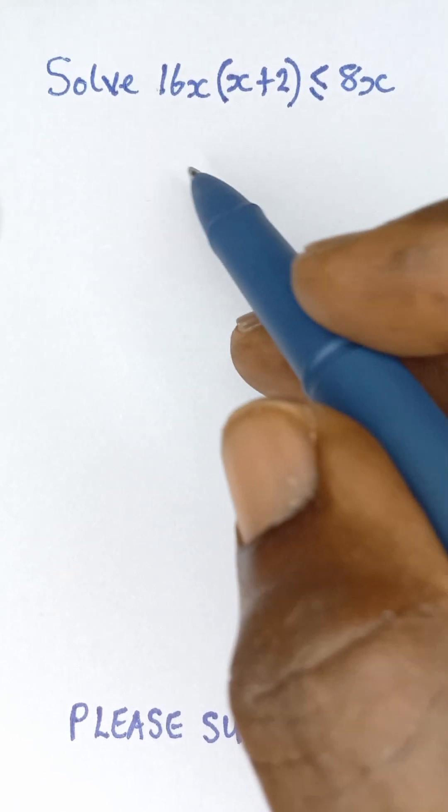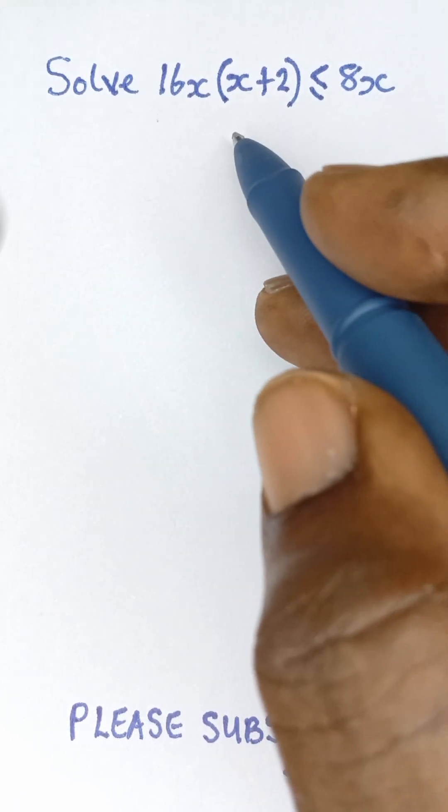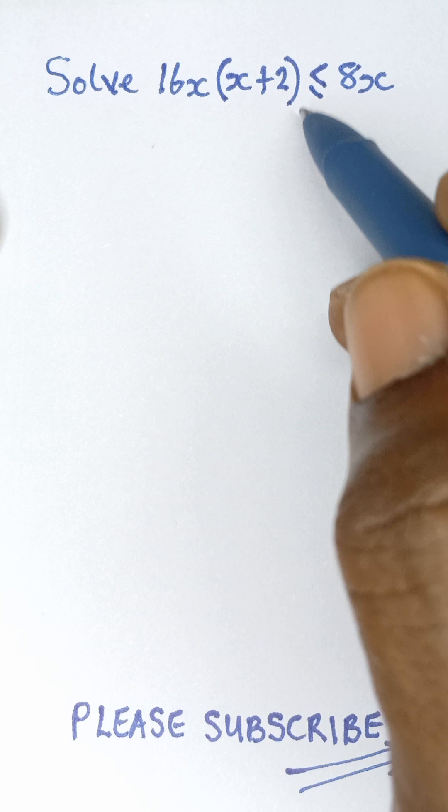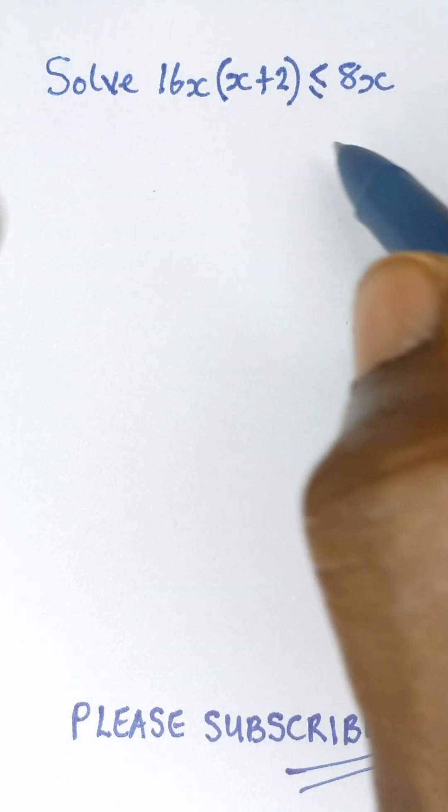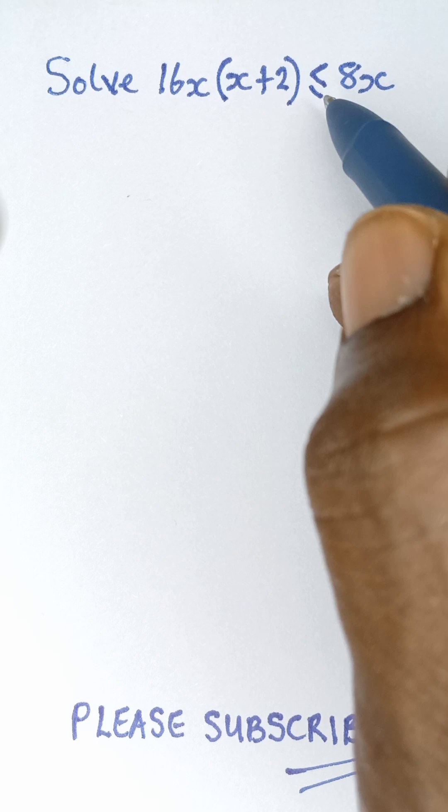The question here says solve 16x(x+2) ≤ 8x. The first step to take here is to ignore this inequality sign and change it to an equality sign.